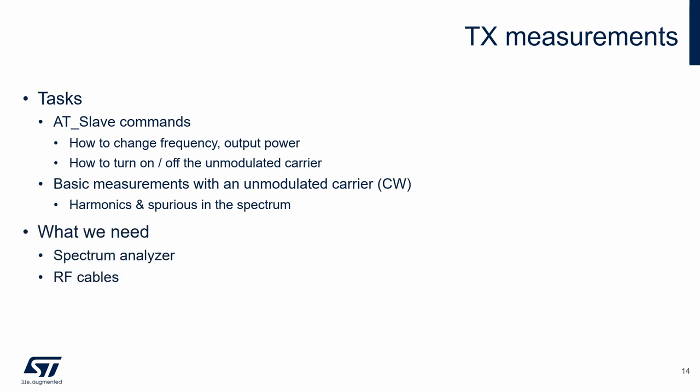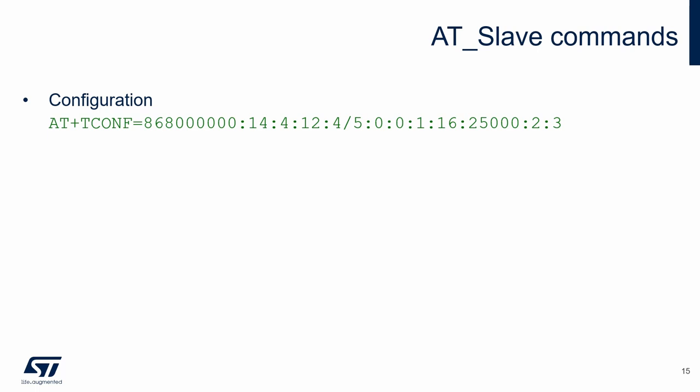For transmitter measurements, we use a spectrum analyzer connected directly to the board being measured using an RF cable. The small insertion loss of the cable is not taken into account in the measurements. The format of the AT Slave configuration command has several parameters: the first parameter is the frequency, and the second parameter is the output power level. The rest of the command contains settings of the modem.